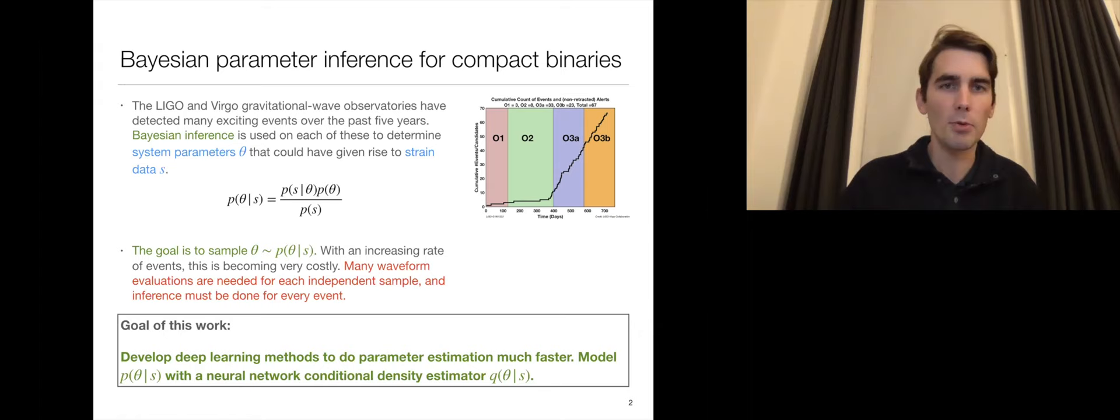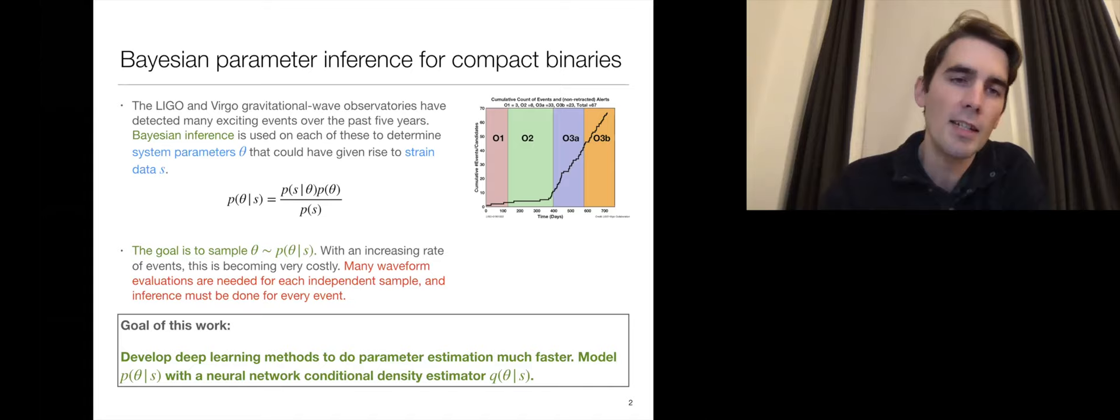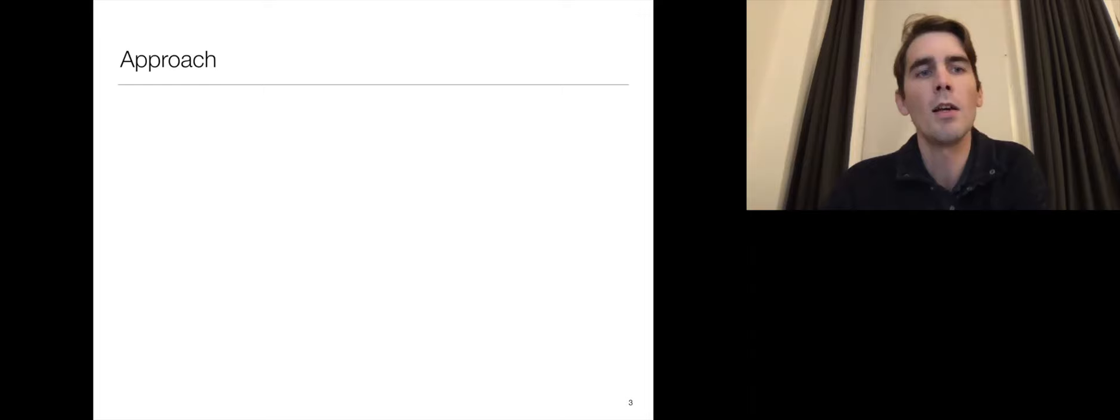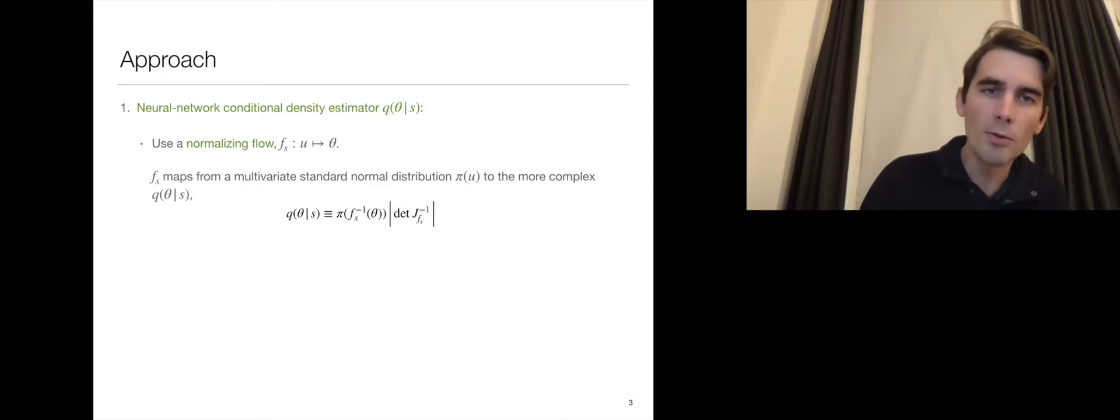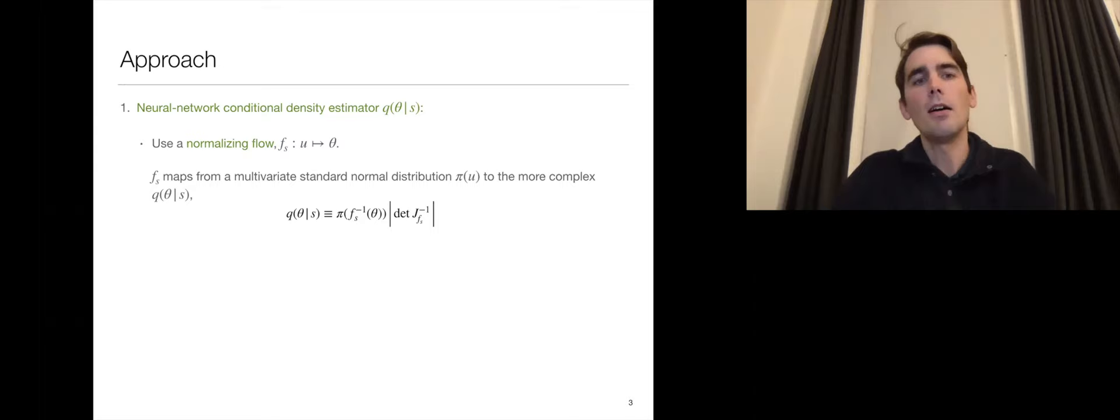The basic idea is that we are going to approximate this posterior distribution using a neural network conditional density estimator, which I'll denote by Q. I want to stress that we're interested in gravitational wave astronomy, not just in getting point estimates for parameters, but we want to understand the distribution of parameters. The basic approach is we are going to use a normalizing flow to define the conditional density estimator Q. We've seen this in one earlier talk on population inference, but we're going to do single event inference.